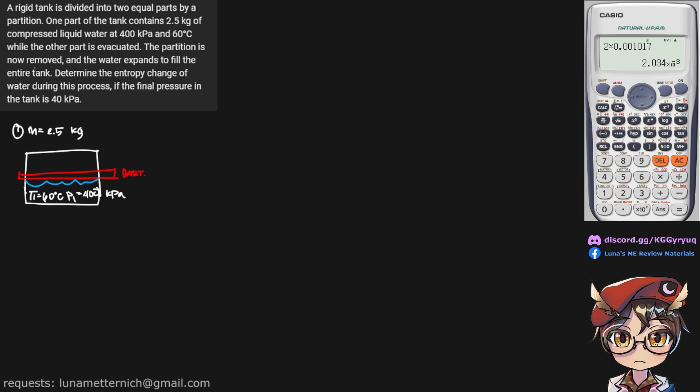The partition is now removed and the water expands to fill the entire tank. So going from state 1 to state 2, we remove the partition, so now the water occupies the entire tank. Determine the entropy change of water during this process if the final pressure in the tank is 40 kPa. So we are given a P2 of 40 kPa.